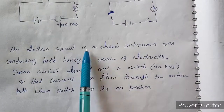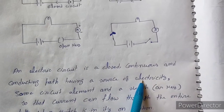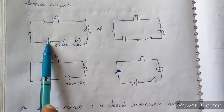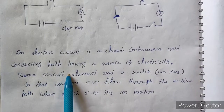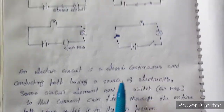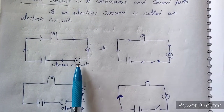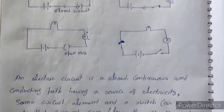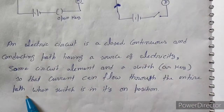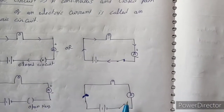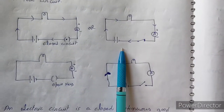An electric circuit is a closed, continuous, and conducting path having a source of electricity — the battery — some electric element such as a bulb, an ammeter, and a switch or key, so that current can flow through the entire path when the switch is in the closed position.